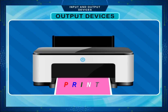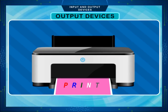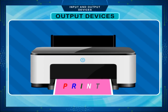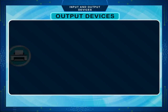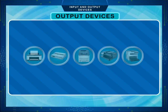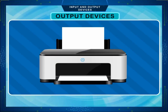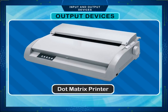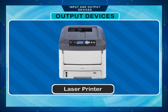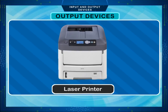Printer. A printer helps to print a document. Anything that is printed on a paper by a printer is called a printout. This printed output is known as a hard copy. There are many types of printers available in the market. The most commonly used printers are Dot Matrix printer, Inkjet printer, and Laser printer.